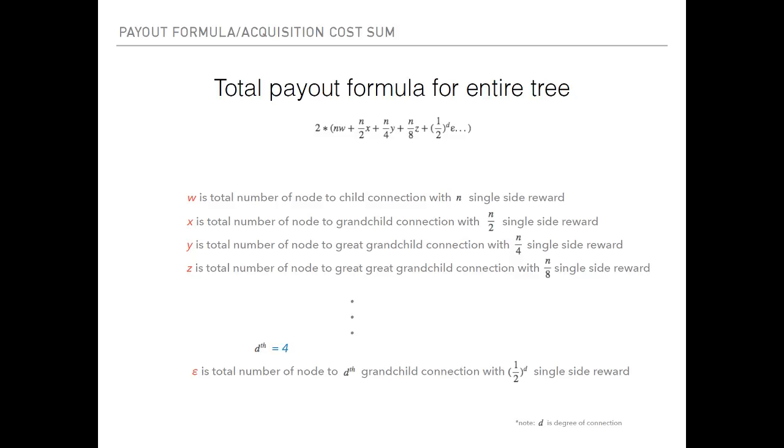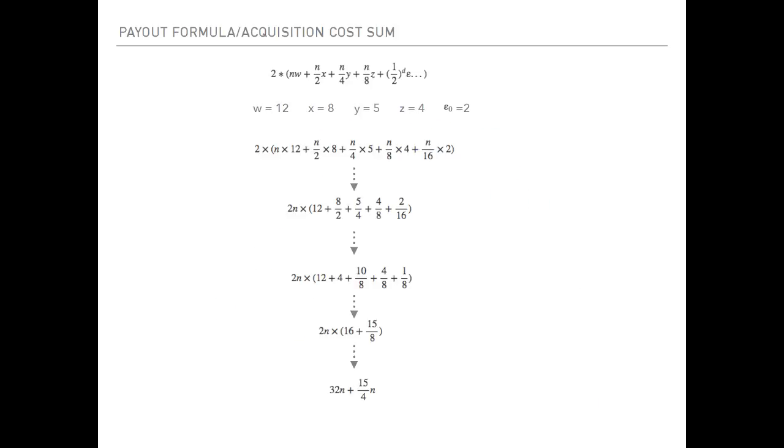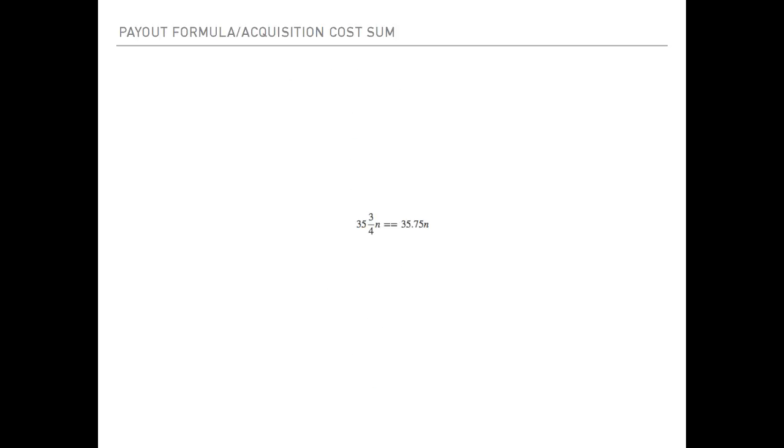D is the degree of connection—basically how many edges there are. Since the one we currently have, going down to the next level, is going to be four, we're looking for great-great-great-great-great-grandchild connections with N over 16 single-sided reward. You count them up: A-C-F-I-K-L and A-C-F-I-K-M. There's only two of them, and this is a pretty long chain already. On the bottom right, you can see all of the number of connections that are happening. Plug all these numbers into the formula, do the math, and you come up with this number: 35.75N.